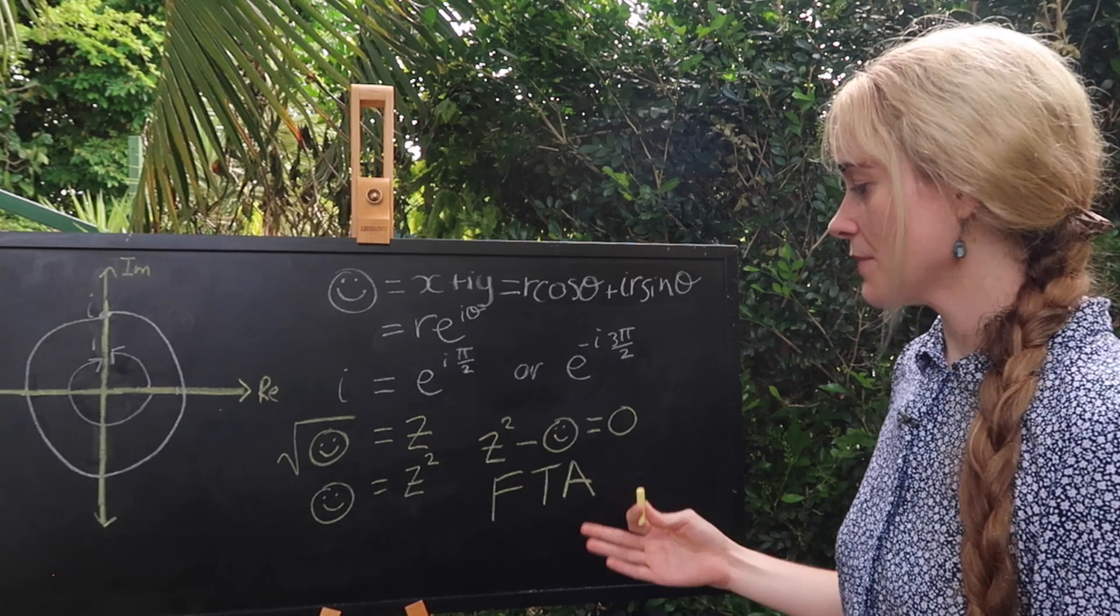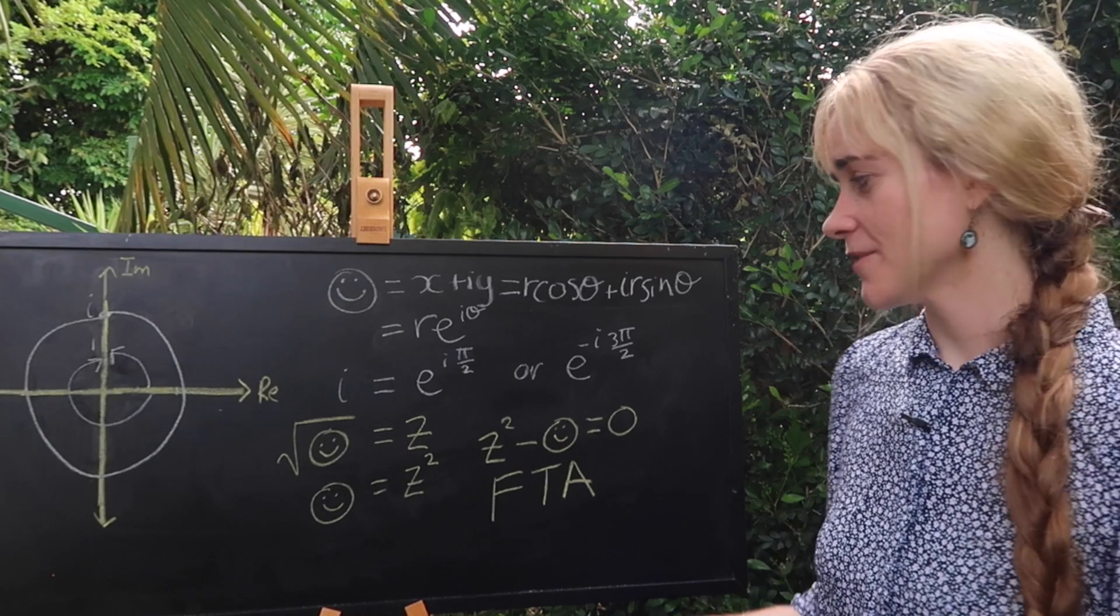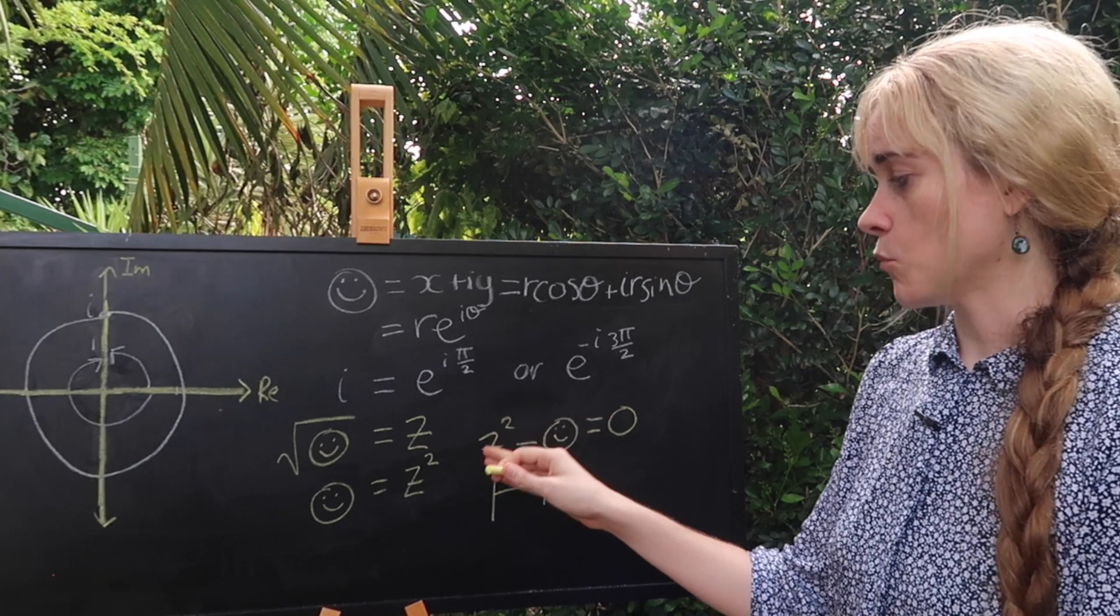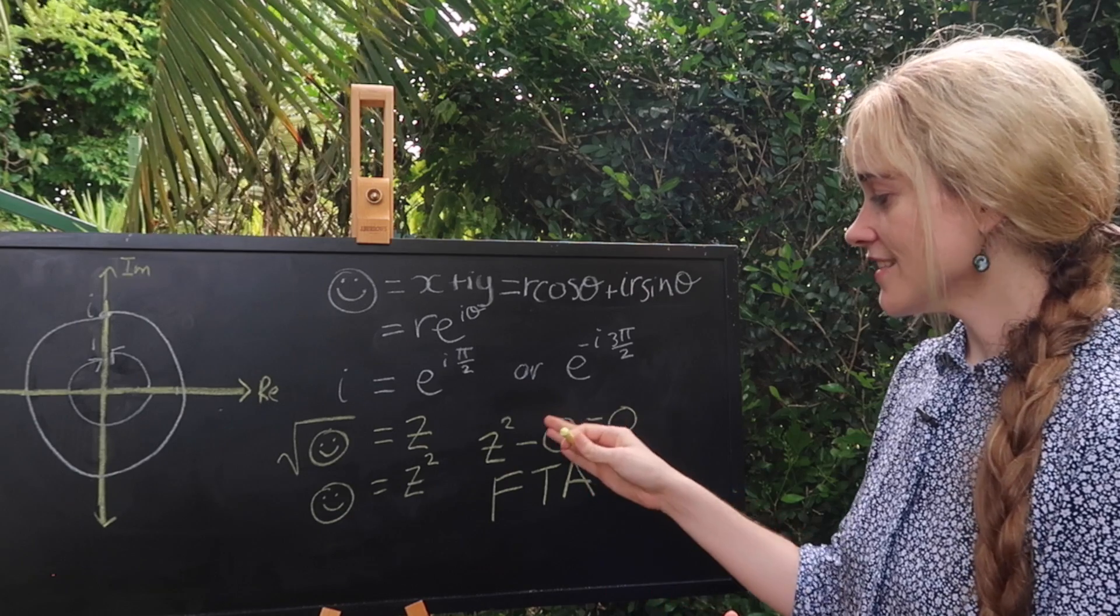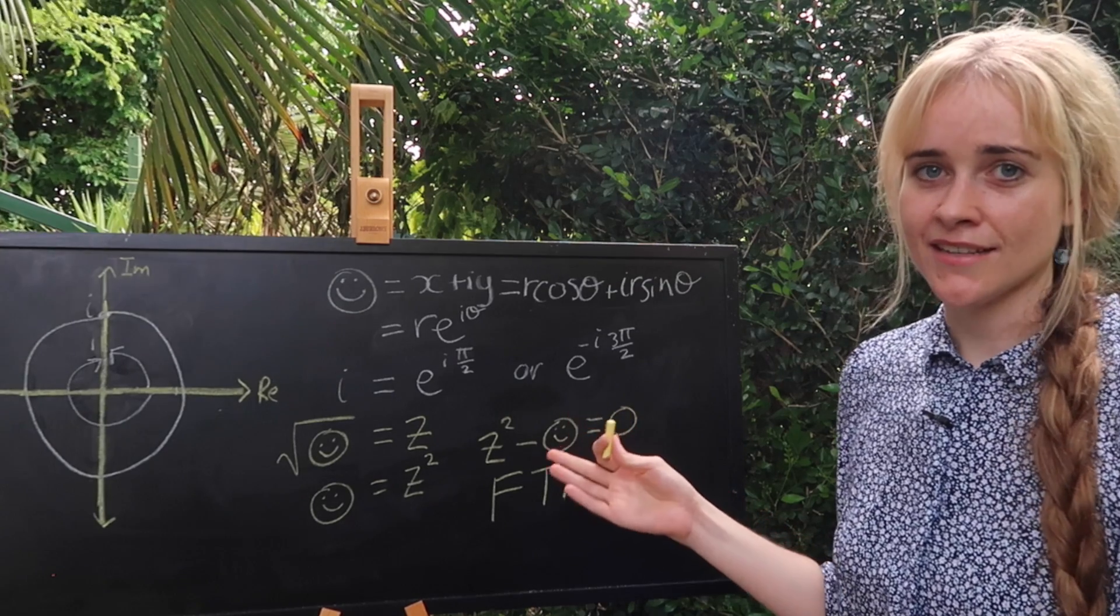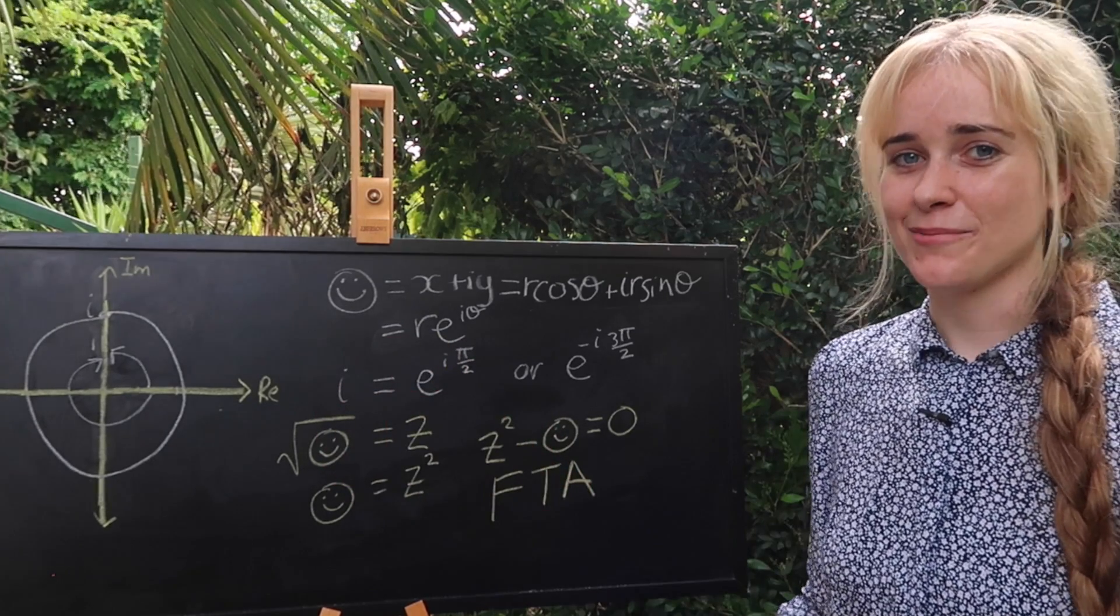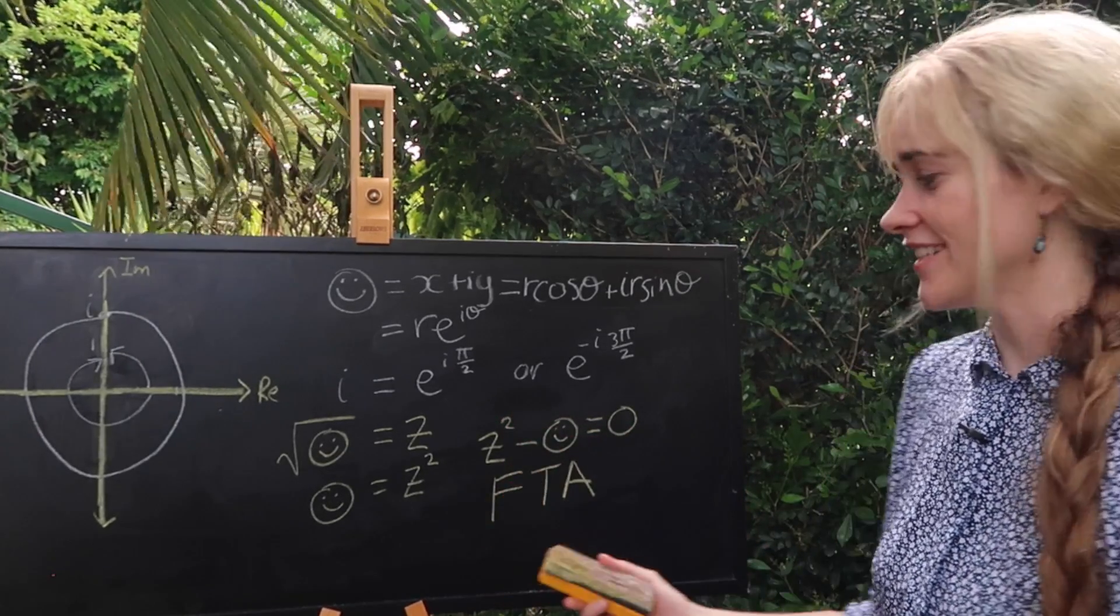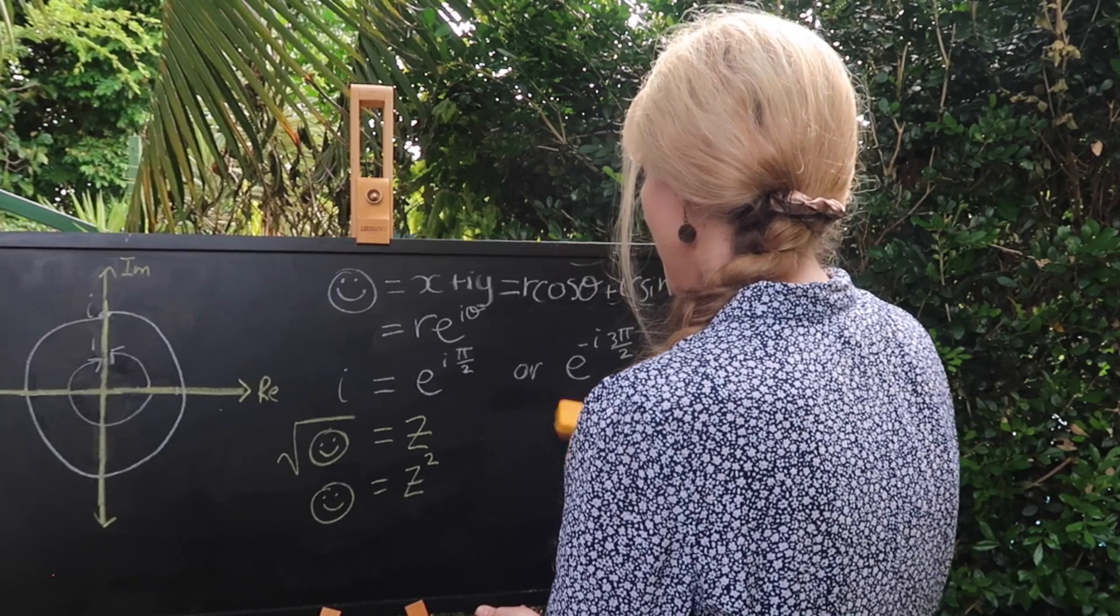The fundamental theorem of algebra means that any polynomial with complex coefficients will have complex solutions. Now do we have complex coefficients here? Well our coefficient in front of the z squared term is one. We don't have a z term on its own so the b as it's usually called is zero and this is our constant term here and the coefficient of our constant term is our complex friend so we do have complex coefficients therefore we know that the answer to the square root of i will be a complex number too. In fact we know that there will be two solutions because this gives us a polynomial of degree two. This is just useful to know so we know how to write and treat our answer as we're going forwards.